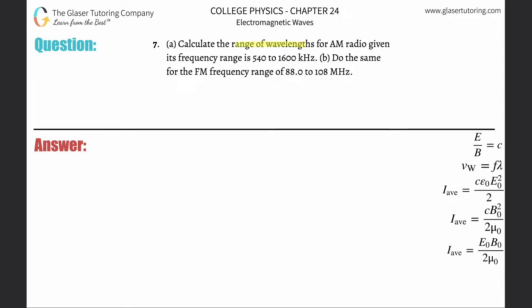Number seven. Calculate the range of wavelengths for AM radio given its frequency range is 540 to 1600 kilohertz. So we have this equation that the velocity of a wave will be equal to its frequency multiplied by its wavelength.